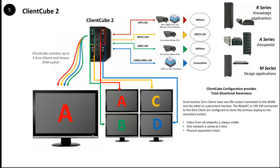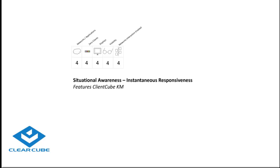Our next example introduces you to another in the ClientCube family. We were previously talking about the ClientCube 2 product. We're now going to give you some use cases with a variation called the ClientCube KM. The distinguishing feature: whereas with the ClientCube 2 the user pushes a button on the DCU to make a network selection, the KM — standing for keyboard and mouse — uses the display configuration coordinates to determine the network activation.